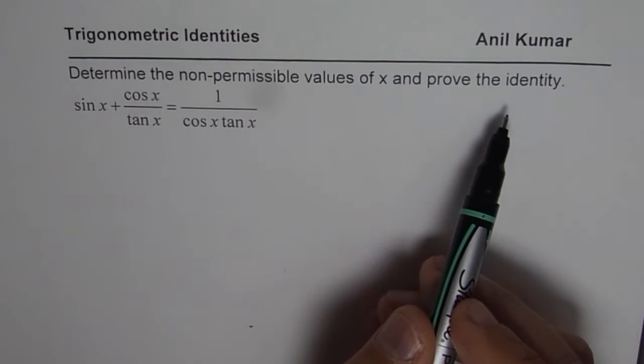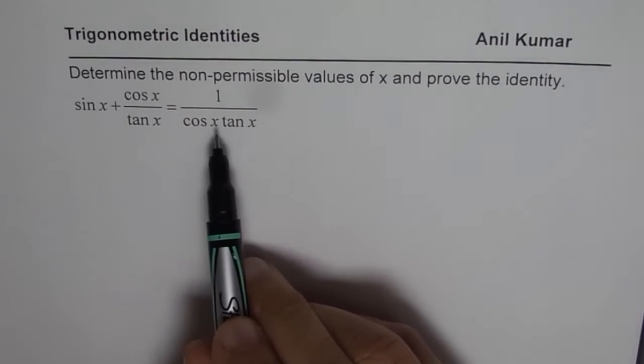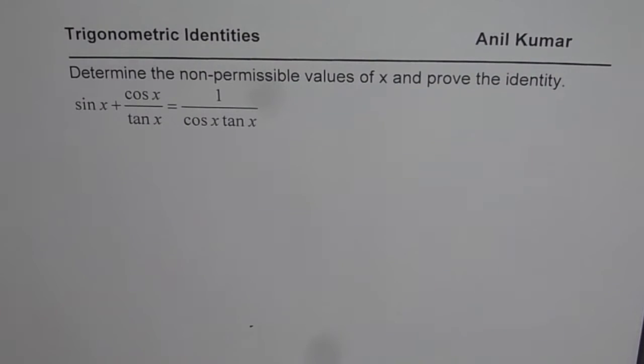An identity is one in which left side is equal to right side for all permitted values. That means there could be some restrictions.